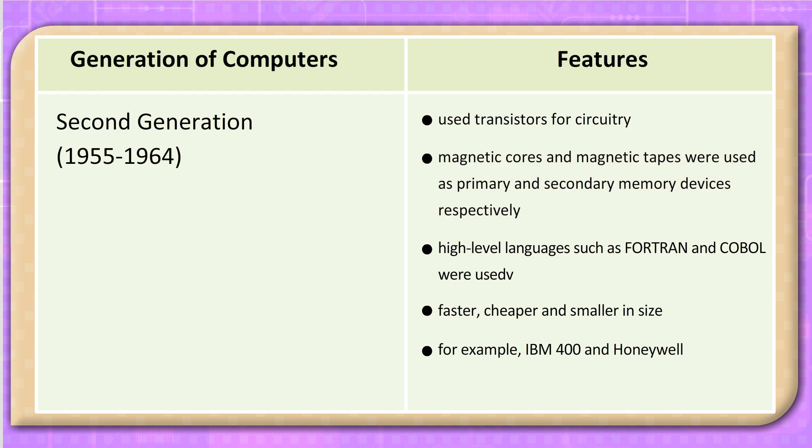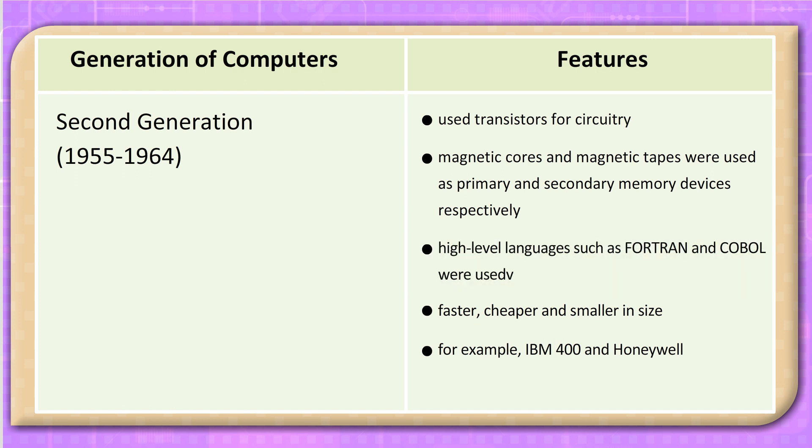Second Generation, 1955–1964: Used transistors for circuitry. Magnetic cores and magnetic tapes were used as primary and secondary memory devices respectively. High-level languages such as Fortran and COBOL were used. These computers were faster, cheaper, and smaller in size.